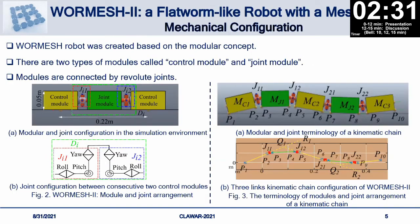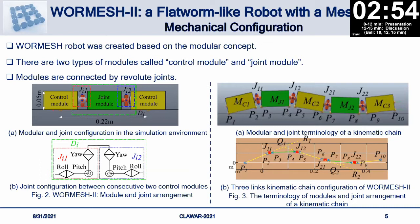The WORM-S robot is developed based on a modular concept. We have two types of modules: the control module and the joint module. The control module has control hardware and battery power supply system, while the joint module has motors and linkage. These joints are connected with revolute joints. The joint layout is explained in figure number two.